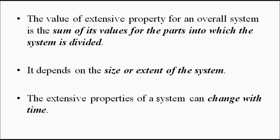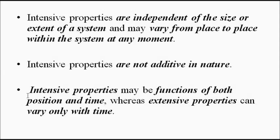For example, mass is an extensive property. If we take an object of mass M and divide it into 10 equal parts, each part will have a mass of M/10, and when combined we get the whole mass. But that is not true for temperature and pressure — each of the 10 parts will have different temperature and pressure values but the same mass. So mass is additive; temperature and pressure are not.